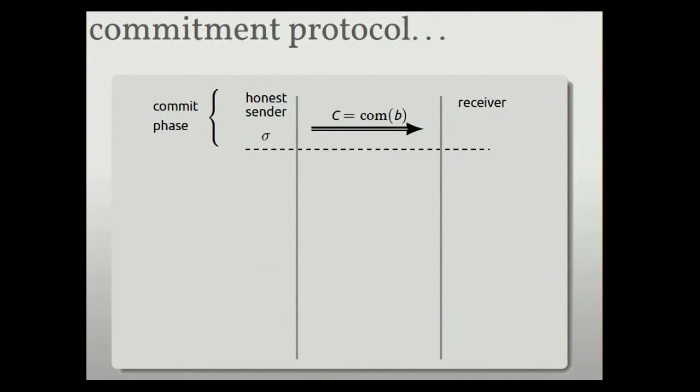So I'll describe the protocol and try to argue some of its security properties. So it's a commitment protocol. The commit phase is just a standalone commitment. Okay? So this com is just a standalone commitment. Nothing fancy here. Sigma is the opening of the commitment. Okay? So you commit to something, you get the opening value that you can use later.